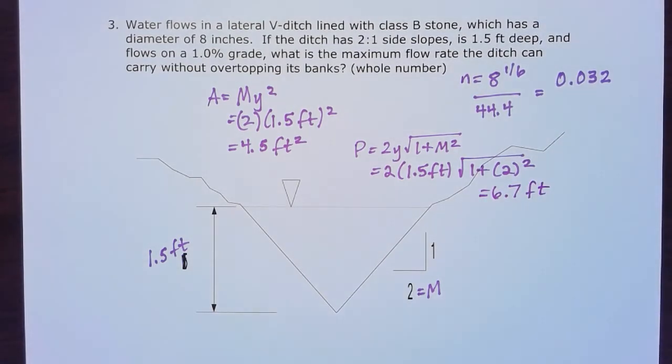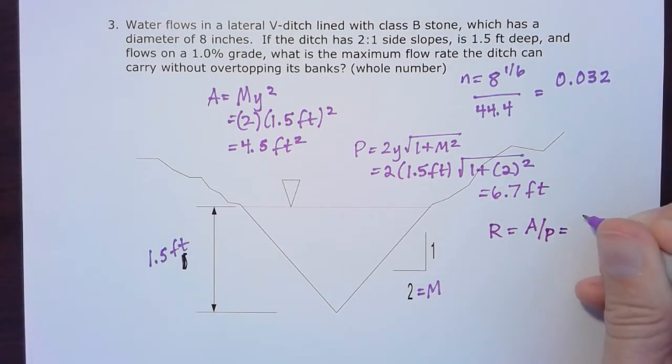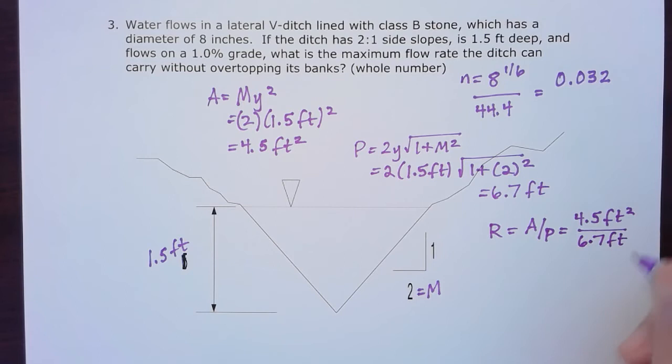To find the hydraulic radius, I'm going to take that area and divide it by the wetted perimeter. So it's 4.5 square feet divided by 6.7 feet, and I wind up with 0.67 feet for my hydraulic radius.